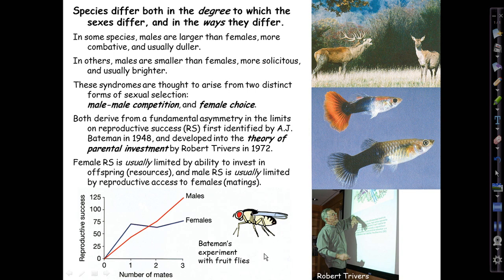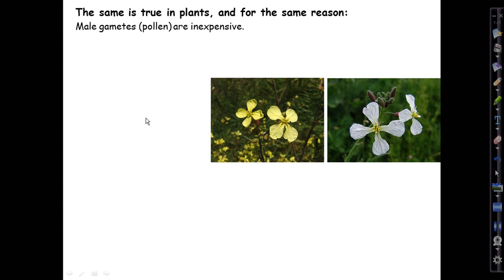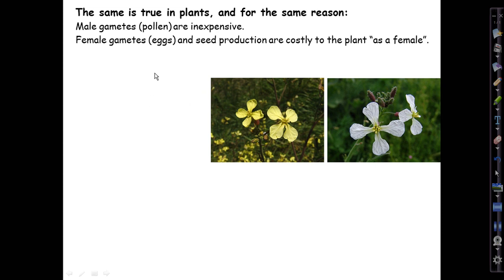Bateman was the first to appreciate that this is really the fundamental principle — or constraint, or trade-off — that governs this whole subject. And it's also true in plants. Male gametes in plants are inexpensive. The cost to make pollen is not nothing, but it's generally not very great and certainly less than producing seeds. Whereas female gametes — the eggs — are much bigger even before pollination, and seed production can be quite costly to the plant acting as a female.